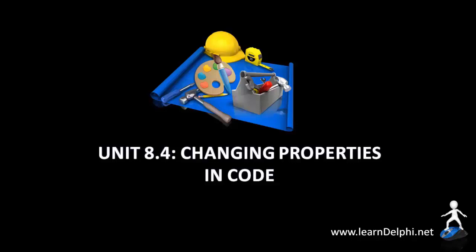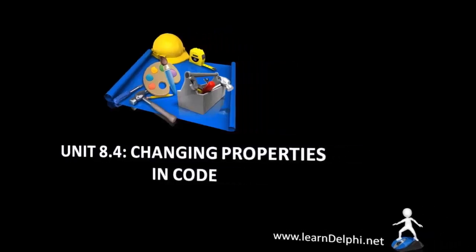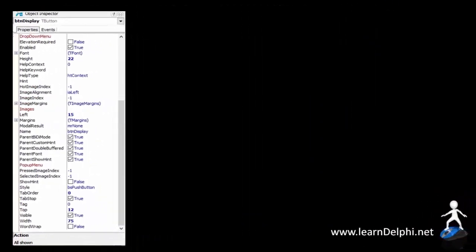All the code that we've typed in the previous exercise is programming statements that change properties in code. But let's start with a quick look at properties again.